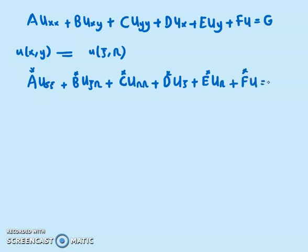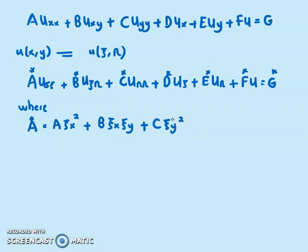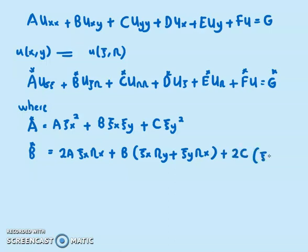Where my A* is actually A psi_x squared plus B psi_x psi_y plus C psi_y squared. Meanwhile my B* is equals to 2A psi_x eta_x plus B times psi_x eta_y plus psi_y eta_x.